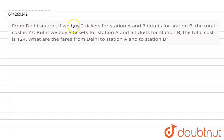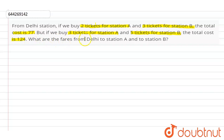From Delhi station, if you buy 2 tickets for station A and 3 tickets for station B, the cost is 77. But if you buy 3 tickets from station A and 5 tickets for station B, the total cost is 124. What are the fares from Delhi to station A and station B?